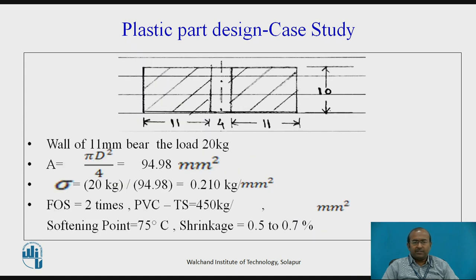This is the preliminary sketch, very cylindrical in nature. Let us consider 11 mm, then a 4 mm hole for the screw, then 11 mm. Height is 10 mm to accommodate the screw. The wall is 11 mm to bear the load of 20 kg. The cross-sectional area calculation gives 94.98 mm². Sigma is 20 kg divided by 94.98 mm², which comes out to be 0.210 kg/mm².